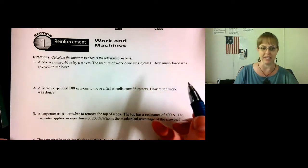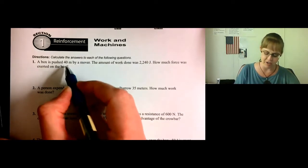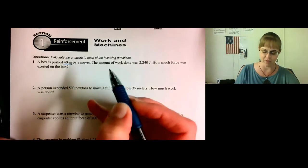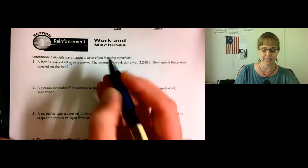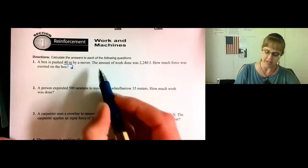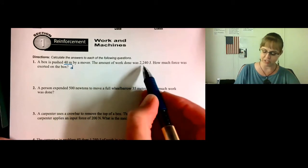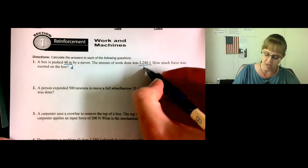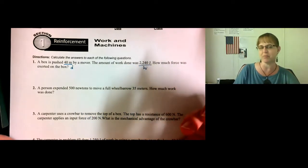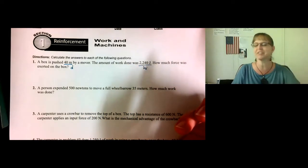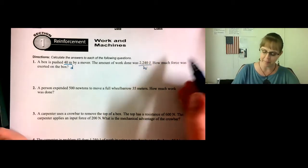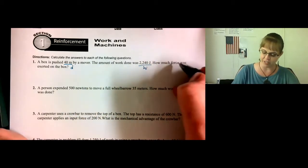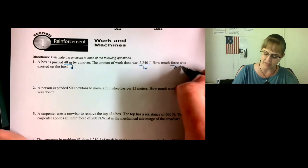First, you need to find what you have been given. A box is pushed 40 meters by a mover. Meters, that's distance. The amount of work done was 2,240 joules. They told you that was the work. How much force was exerted? So we want to find the force.